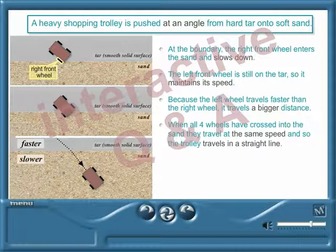When the left back wheel reaches the sand, the whole trolley slows down, stops turning and moves in a straight line at a constant speed.